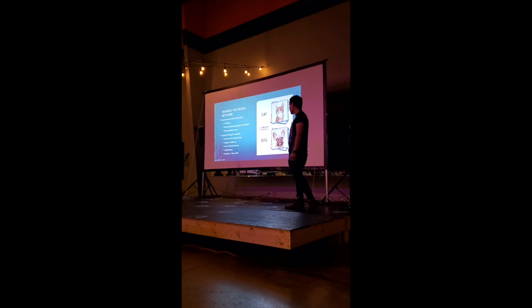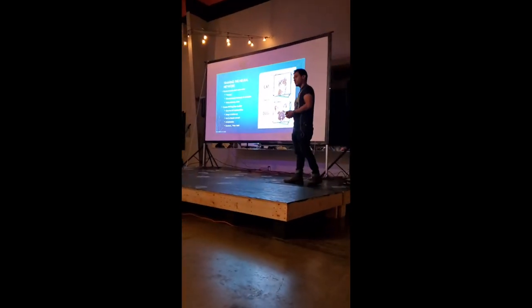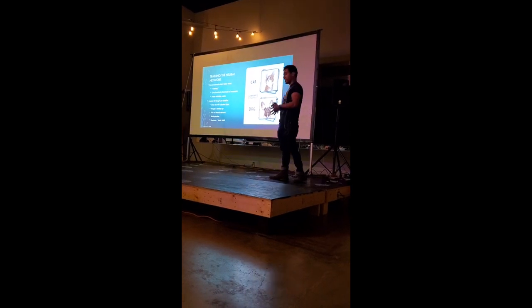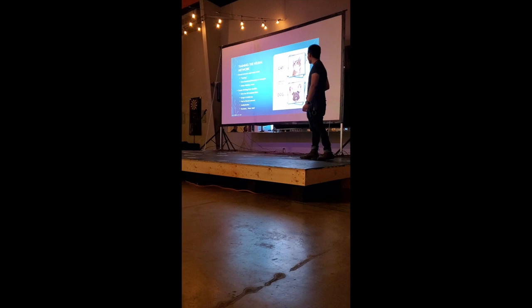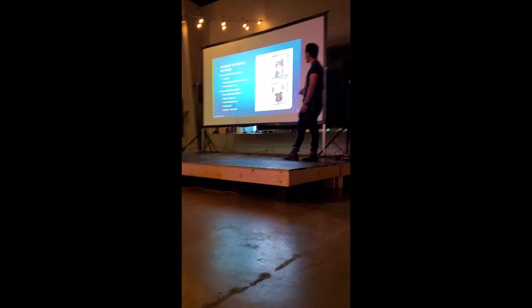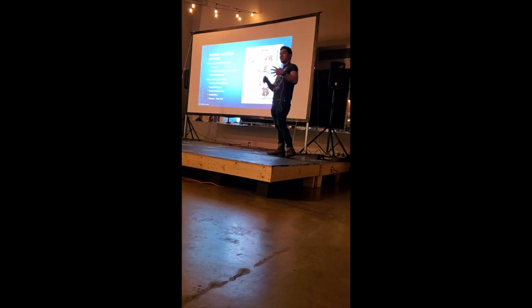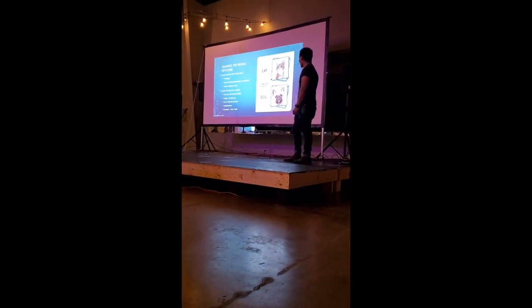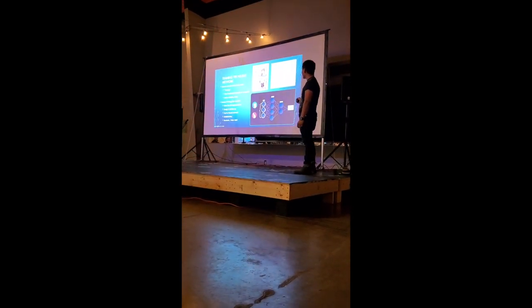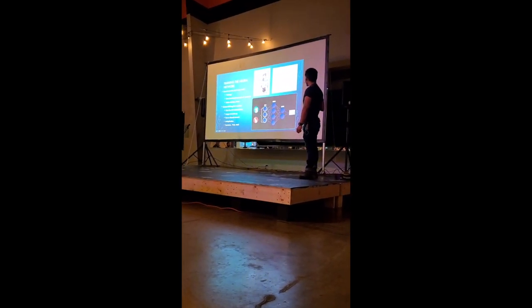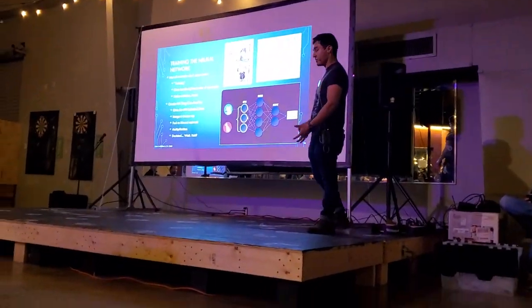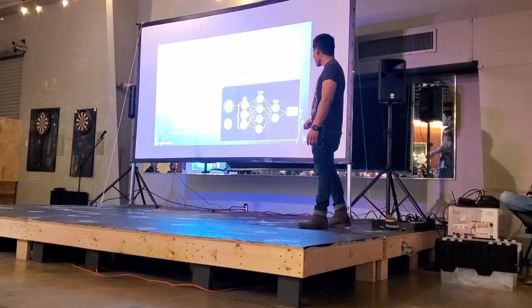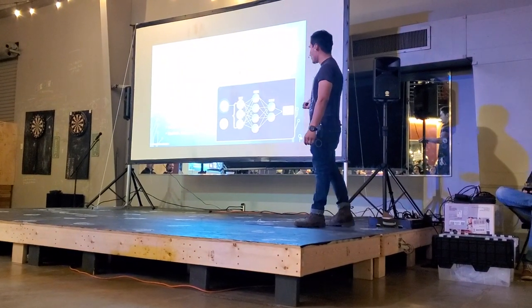The first step is to collect a labeled dataset — a dataset that contains images along with their classifications. We use a bunch of images of cats labeled 'cat' and images of dogs labeled 'dog,' so the network knows whether it made the right decision. The image is then broken up into its pixels and fed as a long string into the input layer, where it performs matrix algebra — that neuron firing process — and gives us a classification, sometimes the wrong one.